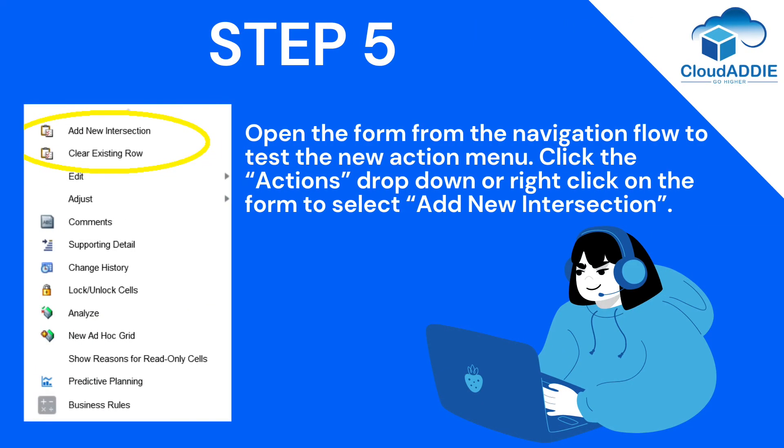Step 5. Open the form from the navigation flow to test the new action menu. Click the Actions drop-down or right-click on the form to select Add New Intersection.